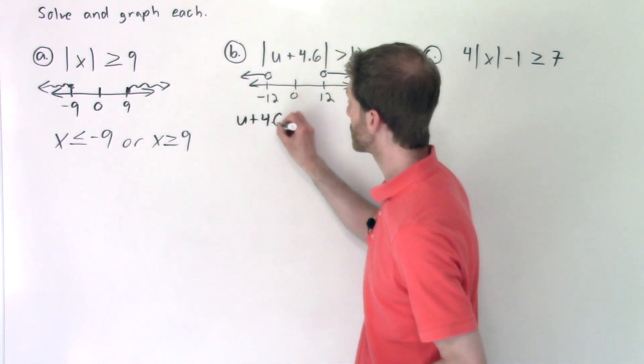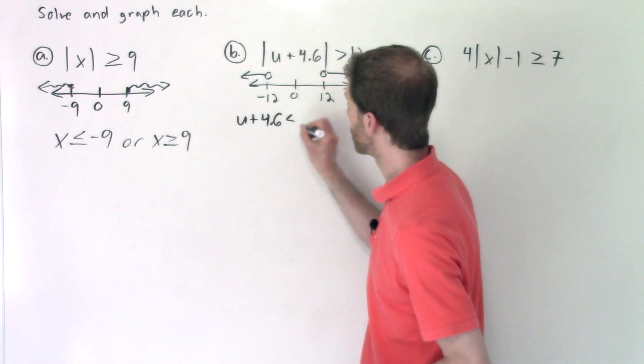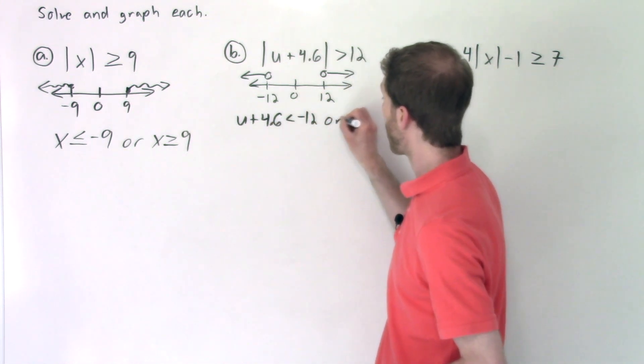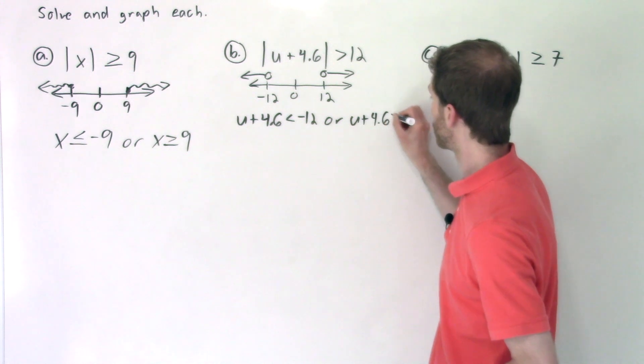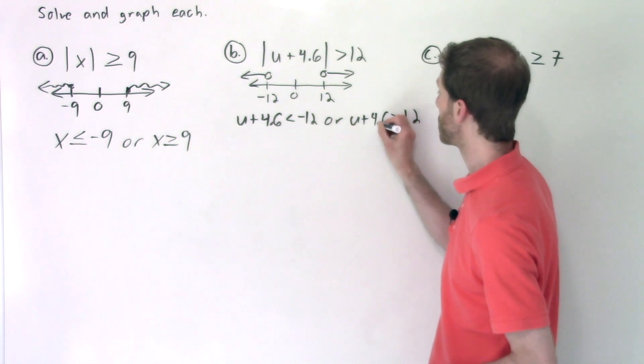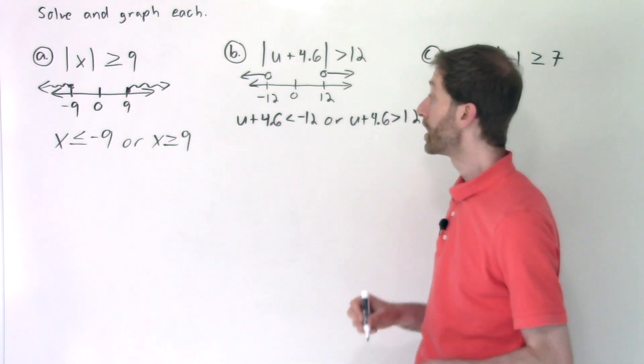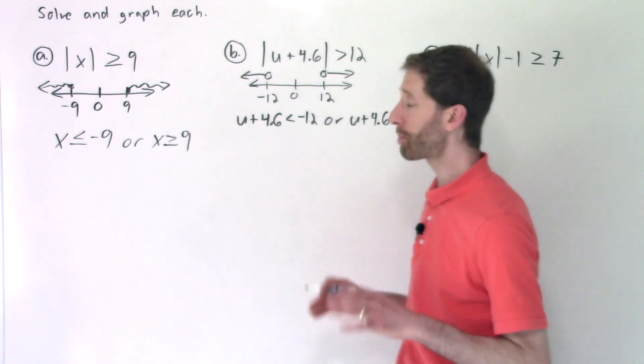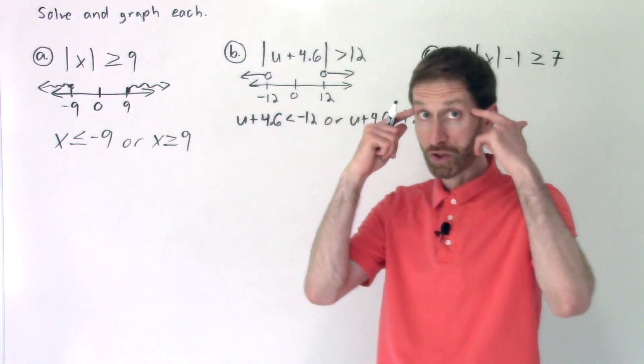U plus 4.6 is less than negative 12 or U plus 4.6 is greater than positive 12. That would be a distance of more than 12. And that's it, peeps. And I'm just going to pause for a second and go over what you could be doing with your noggin.